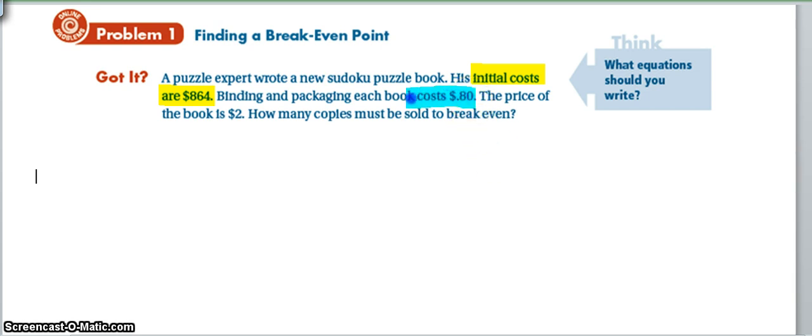If we see this puzzle expert wrote a new Sudoku book, and his costs for writing this entire book were $864, then his building and packaging for each book costs $0.80. The price that he's going to charge for the book is $2. So how many copies must he sell in order to break even? Go ahead and try to set up what you think would be a way that we can solve that using our equations.